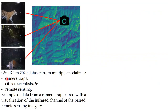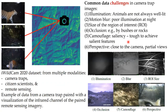Challenges in wildlife camera trap data include illumination variations at night, darker locations, blur, very small regions of interest — when the animal is far away or in a bush — occlusions, camouflage, and perspective issues where the animal is too close to the camera. From this kind of challenging dataset, how can you find solutions? There are lots of scopes and very little has been done.